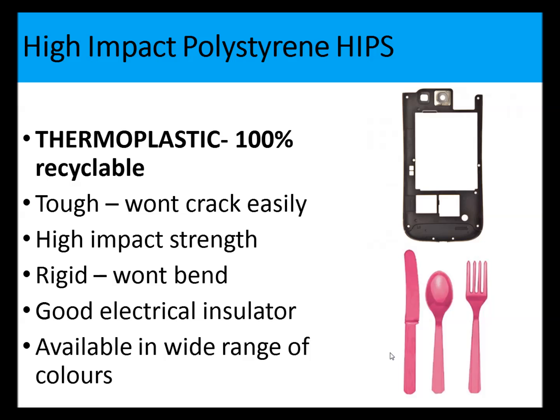High Impact Polystyrene (HIPS) is used in injection molding. It is a thermoplastic, easily recyclable, fairly tough with high impact strength, it won't bend, it's a good electrical insulator, and it's available in a wide range of colors.